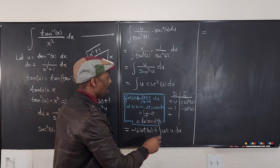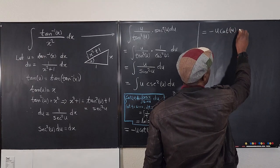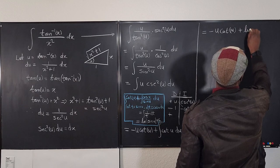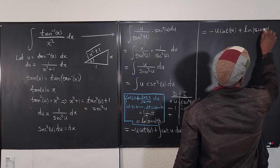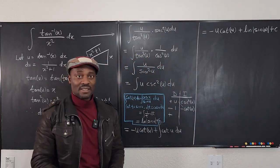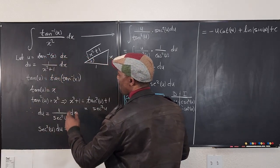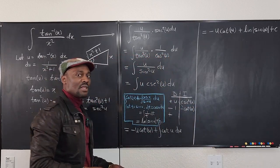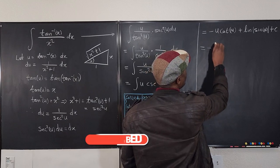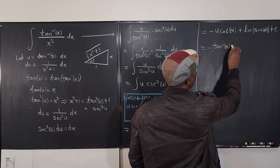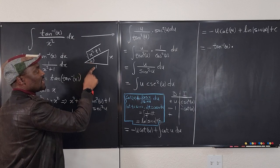Adding the constant, the full integral in terms of u is: −u · cot(u) + ln|sin(u)| + C. Now we go back and substitute u = arctan(x). So our answer becomes negative arctan(x) times cot(u).